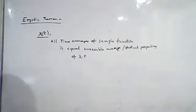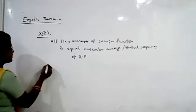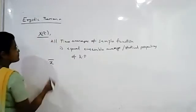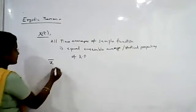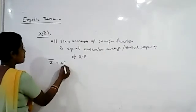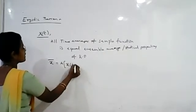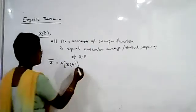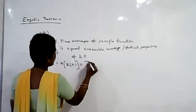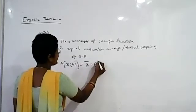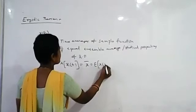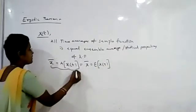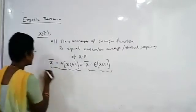The time averages we discussed are for a single random variable. The time average x-bar is found from the sample function, denoted as A of x(t), and it should be equal to capital X-bar, which is the expected value of x(t). This is called the time average, whereas the expected value is called the ensemble average.